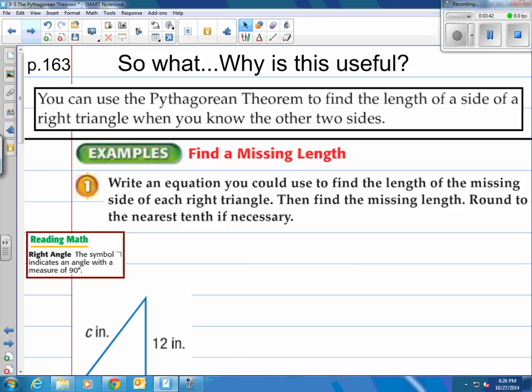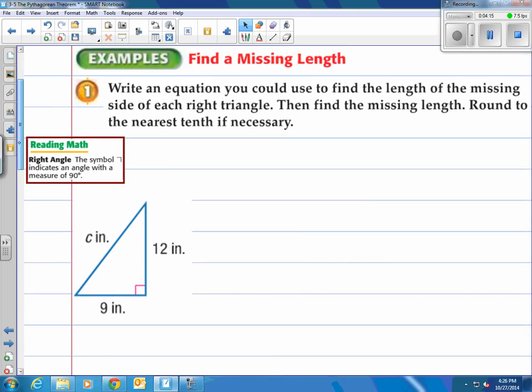Alright let's see what this does. It says so what? Why is this so useful? Well you can use the Pythagorean theorem to find the length of a side of a right triangle when you know the other two sides. So if you know the other two sides of the triangle you can figure out the third side. So example one find a missing length. It says write an equation you could use to find the length of the missing side of each right triangle then find the missing length round to the nearest tenth if necessary. You can use a calculator on this material. Actually I'm hoping you have one available and ready to go.